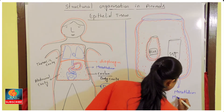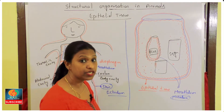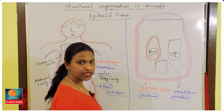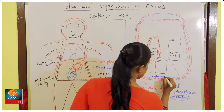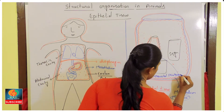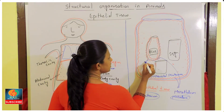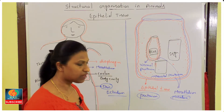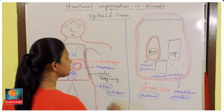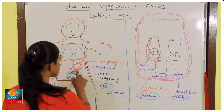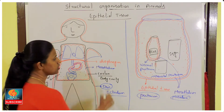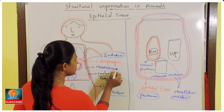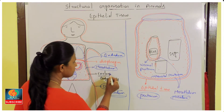If it is covering the body cavity inside, it is known as parietal peritoneum. The epithelial tissue which covers the visceral organs is known as visceral peritoneum. Both parietal and visceral peritoneum are derived from mesothelium. Inside the visceral organs like stomach or intestine, the epithelial tissue is derived from endoderm.